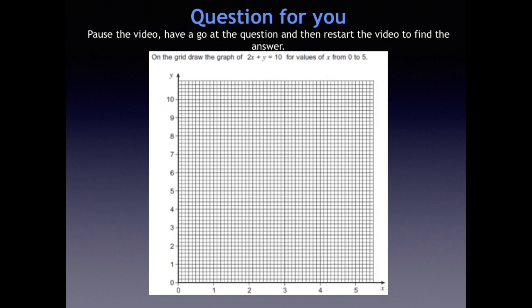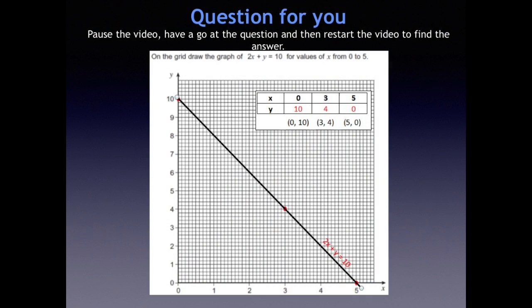Now, here's one for you to try. It's a wee bit trickier, as 2x plus y equals 10 will actually have a negative gradient. The line will go down from left to right. But just pause the video, have a go at it, and then restart the video and see if you've got it right or not.